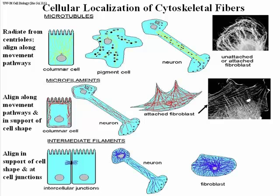Finally, intermediate filaments. We've already seen that intermediate filaments are often associated with cell junctions — either a spot desmosome or a belt desmosome — making the junctions very tight and firm. So intermediate filaments have a function in strengthening cell attachments.